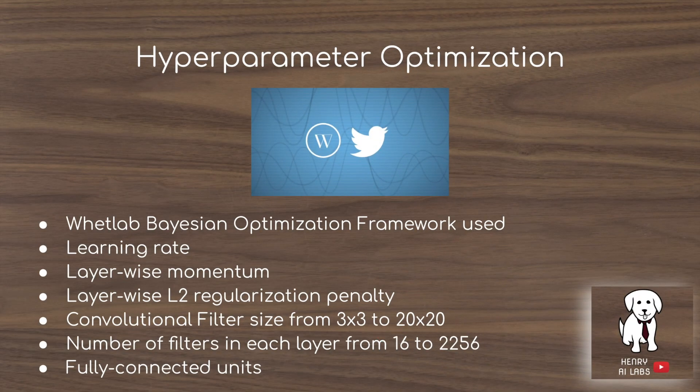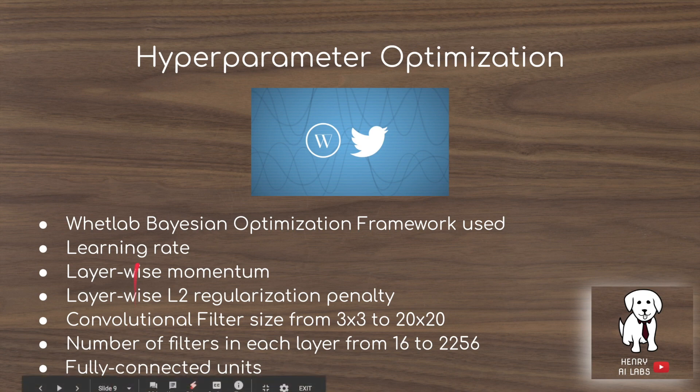Additionally, in their experiment, they use hyperparameter optimization. This is a really interesting component of deep neural networks - they're very sensitive to optimization of subtle hyperparameters like learning rate, the layer-wise momentum term (a parameter on the optimizer used for gradient descent updates), the regularization penalty, and even convolutional filter sizes from 3x3 to 20x20. They also test the number of filters in each layer and the number of fully connected units in the final vector used to compare distance between images.